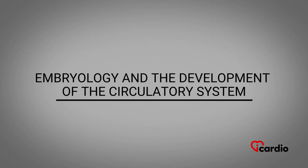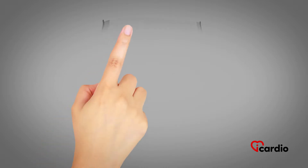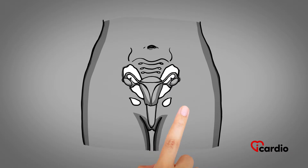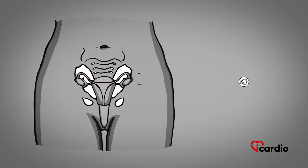Embryology and the development of the circulatory system. An egg cell, or ovum, and a sperm cell usually meet in the fallopian tubes.